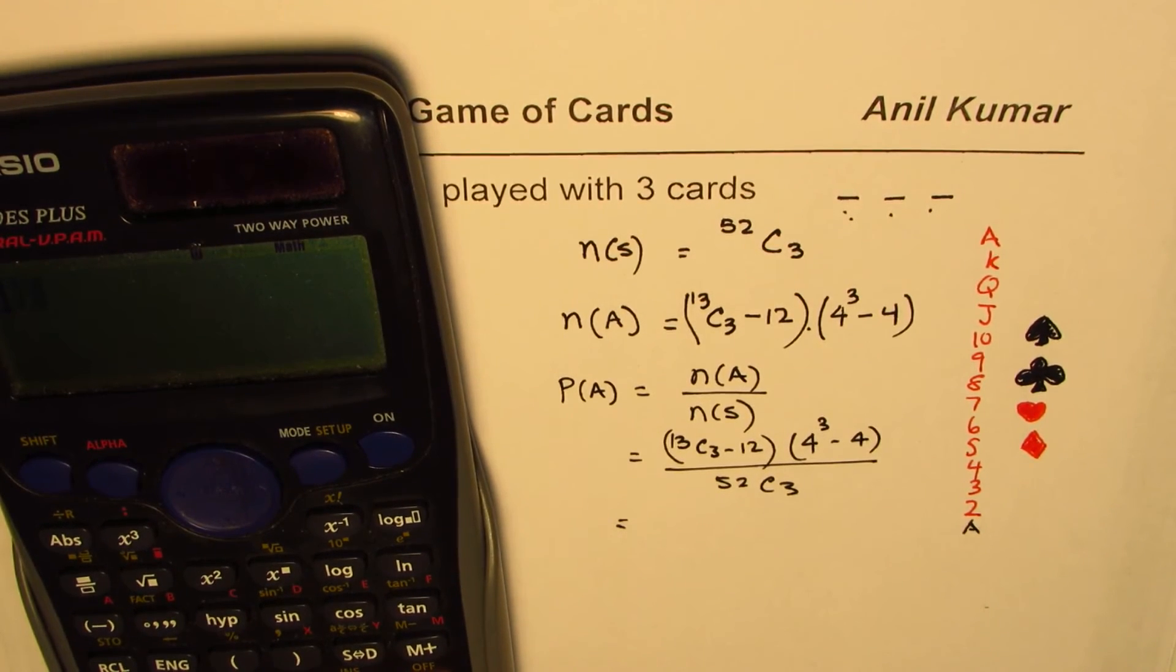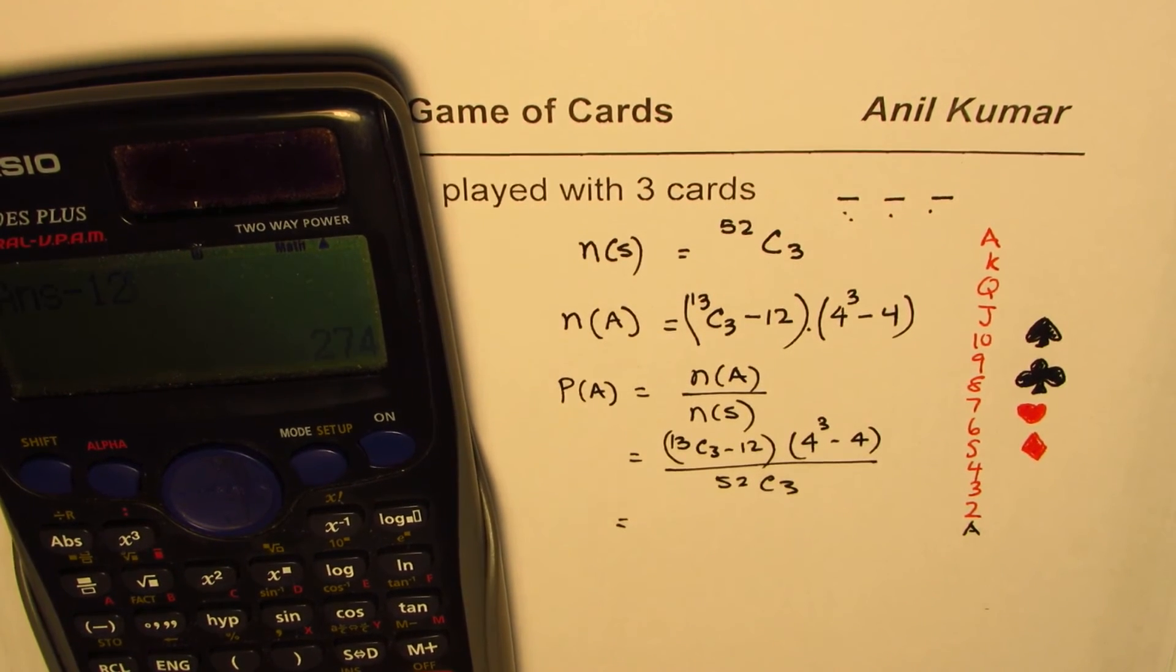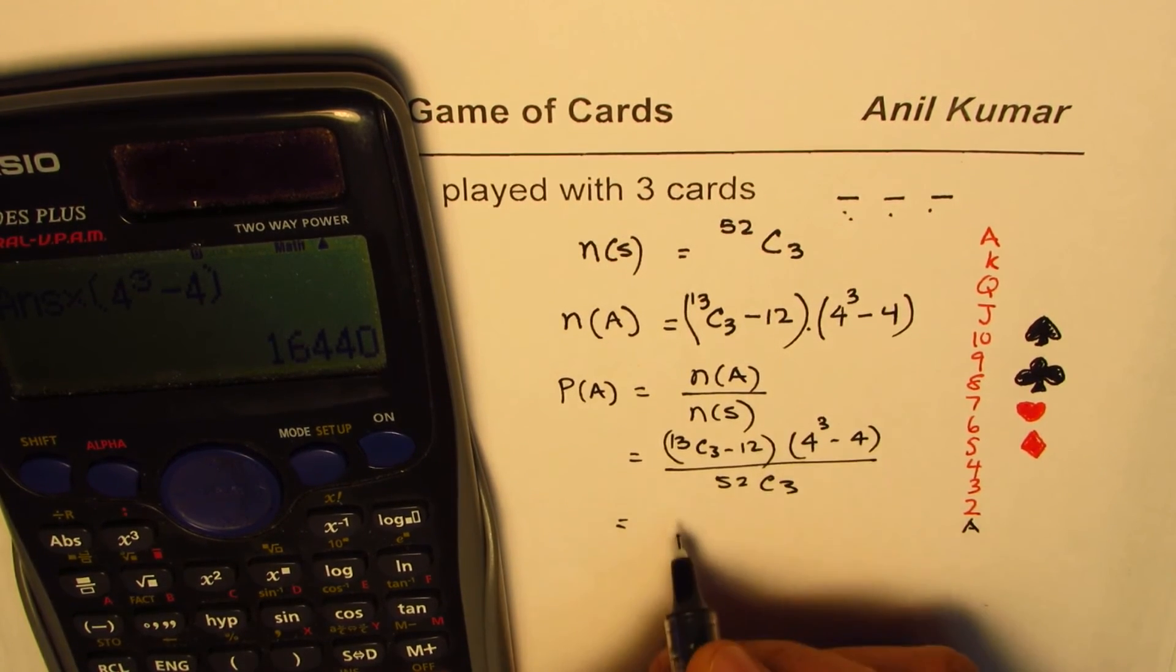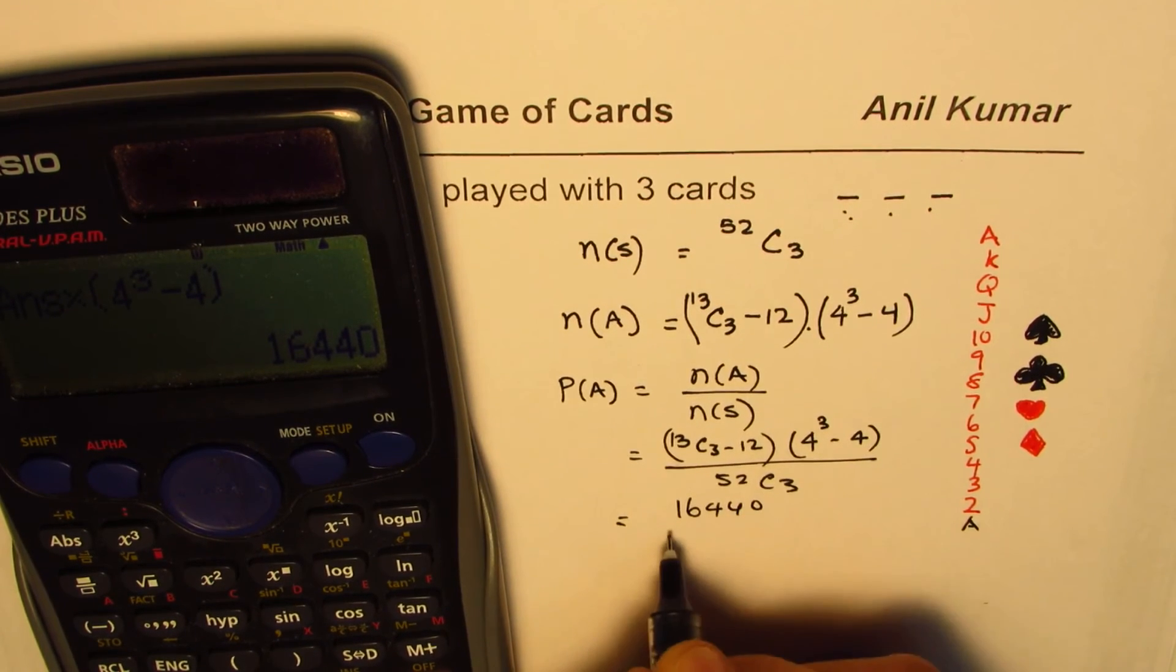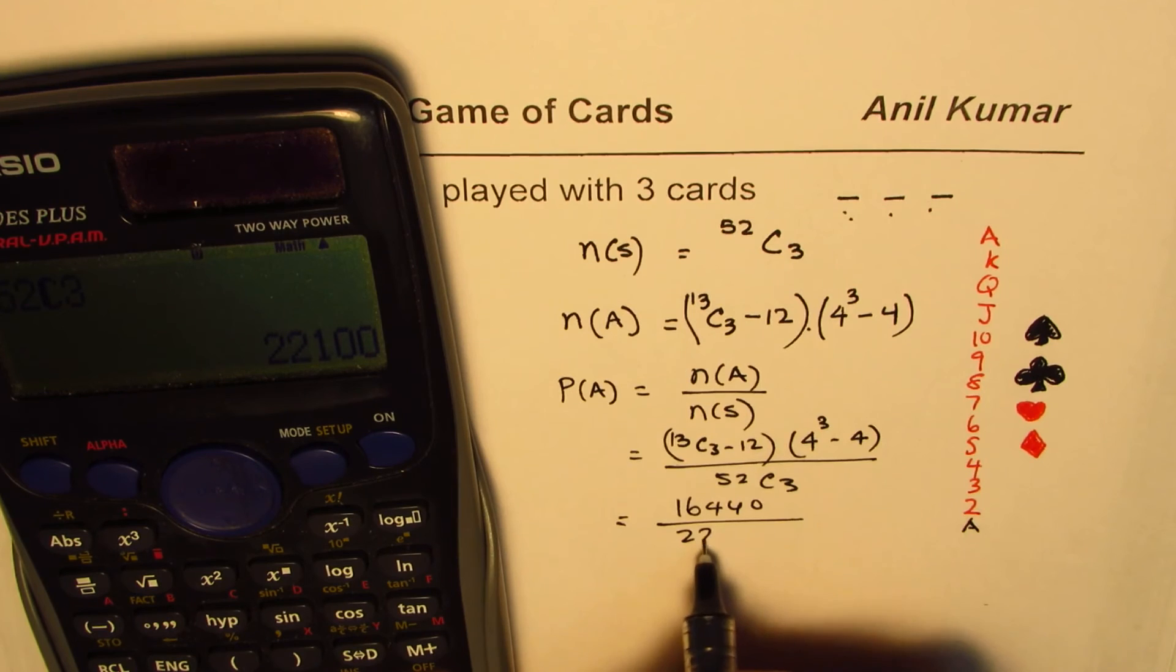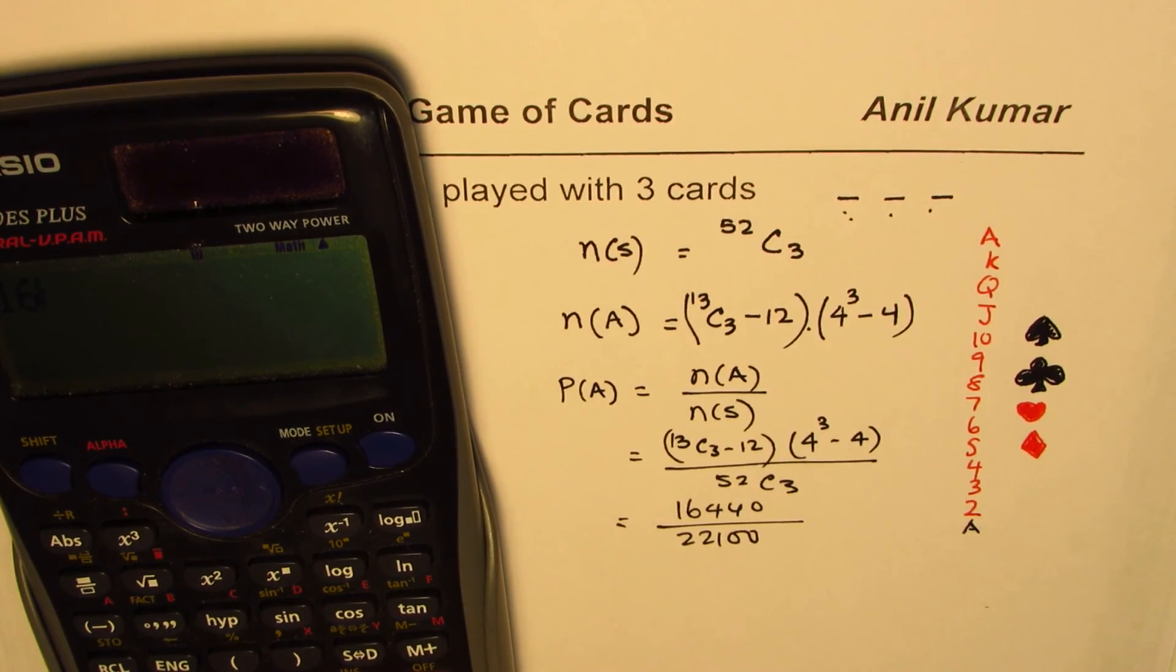We can calculate this value using calculator. So we have 13 C 3 minus 12, and then we'll multiply this by, within brackets, 4 cube take away 4, equals to, which is 16,440, divided by 52 C 3. So first we'll write 52 C 3, 22,100.